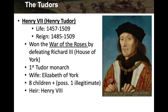First is Henry the Seventh, or Henry Tudor. You'll see their life and reign dates — you don't need to know the dates for an exam, just to give you an idea of the time period. His life was 1457 to 1509 and he reigned from 1485 to 1509. He came to power by winning the War of the Roses, defeating Richard the Third of the House of York at the Battle of Bosworth. He became the first Tudor monarch, had a wife named Elizabeth of York, and had eight children.